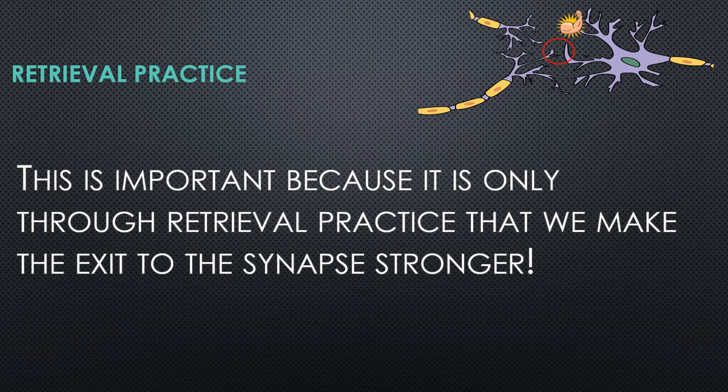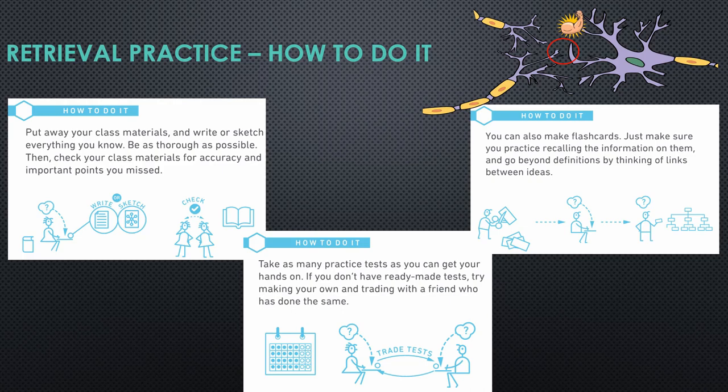Moving on to retrieval practice: retrieval practice is important because it's the only way that we can make the exit to the synapse stronger. This is the idea that we're practicing thinking about and remembering information. Step one is to put away your class materials and write or draw everything you remember about that lesson. It's really key that you do this from memory — reading the materials again will add to our input, but it won't help our exit.